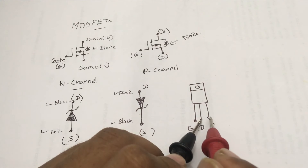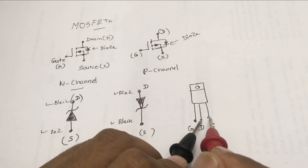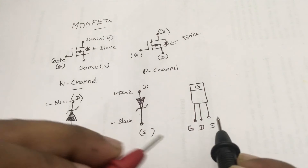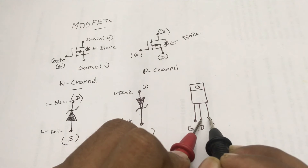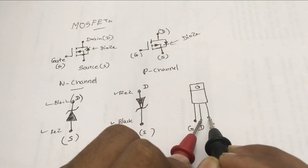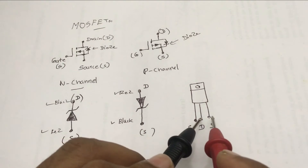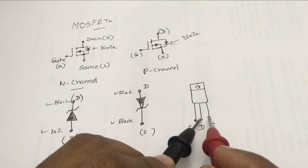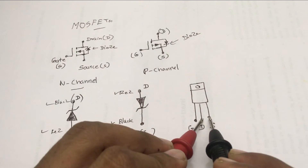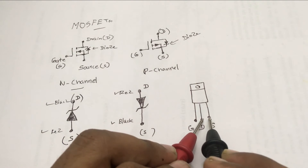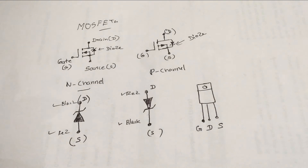Suppose you are not aware of the MOSFET's type. If you connect red to drain and black to source and the multimeter shows a reading, then connect red to source and black to drain and there is no reading, you can see that the MOSFET is a P-channel MOSFET. If the multimeter shows no reading when connecting red to source and black to drain, but shows a reading with red to drain and black to source, you can identify it as an N-channel MOSFET. You can also be satisfied to some extent that the MOSFET is working well.